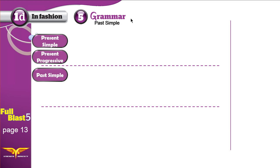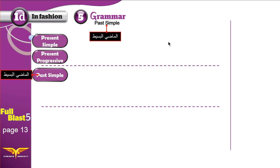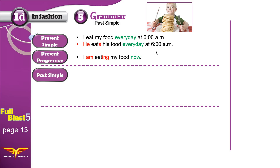Today we will learn how to make sentences in the past simple. Before we start, let's make a quick revision of the grammar we learned in unit 1A: the present simple and the present progressive.